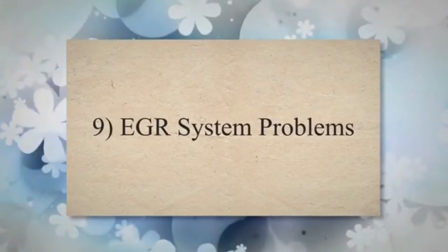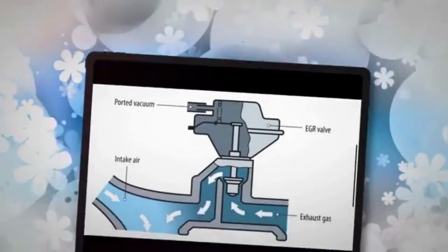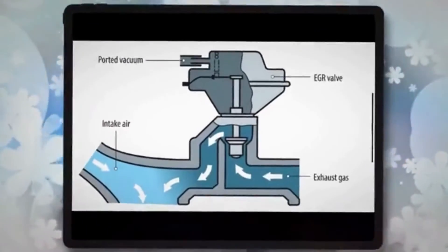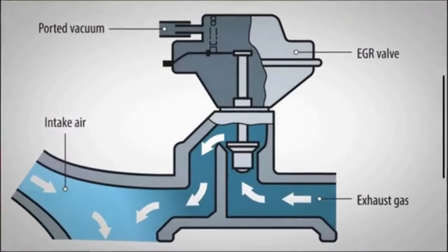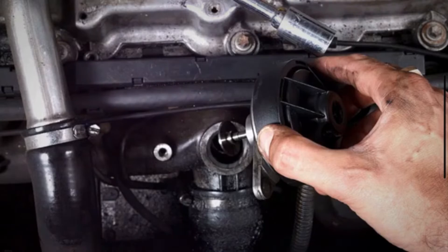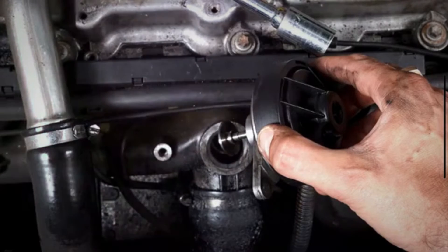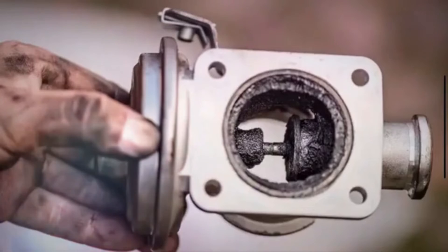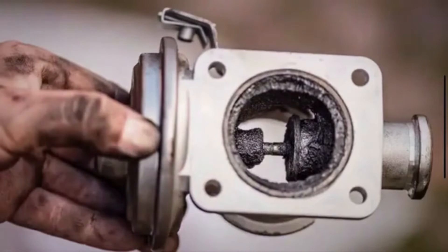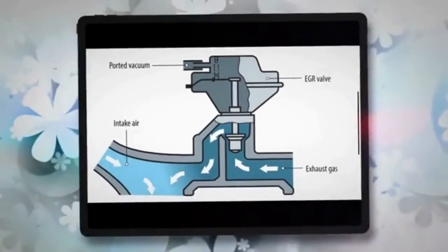9. EGR system problems. The EGR system of your vehicle recirculates exhaust gases to reduce emissions. A faulty EGR valve or related components may affect the air-fuel ratio, leading to misfires and the PO300 code.